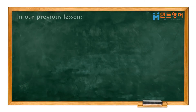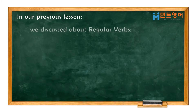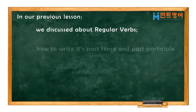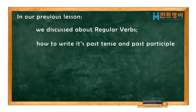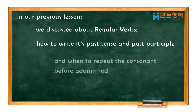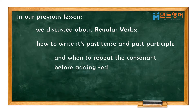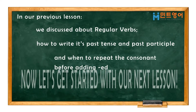In our previous lesson, we discussed about regular verbs, how to write their past tense and past participle, and when to repeat the consonant before adding "-ed."